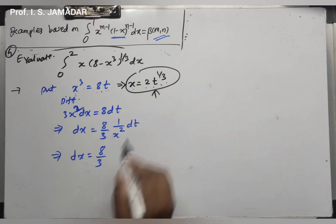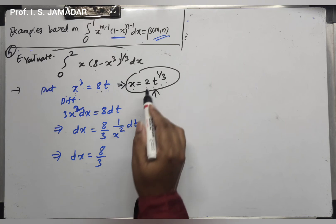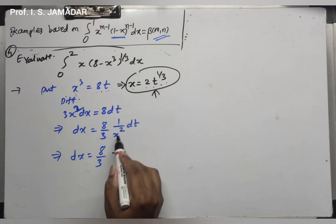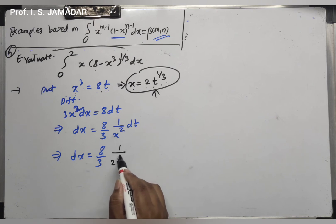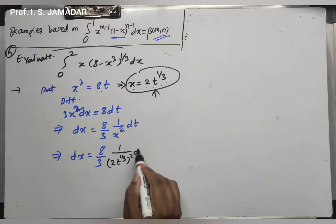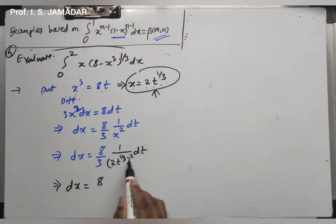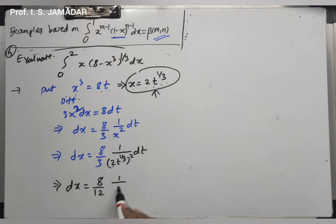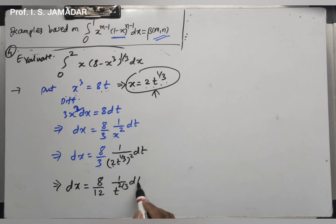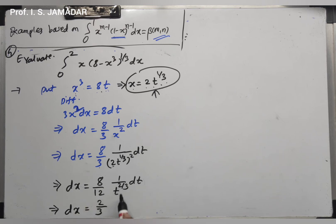The substitution summary for example 4: x³ = 8t, x = 2t^(1/3), and dx = (2/3) t^(-2/3) dt. For the limits: when x = 0, t = 0; when x = 2, 2³ = 8 = 8t so t = 1. Therefore the limits change from 0 to 2 into 0 to 1.